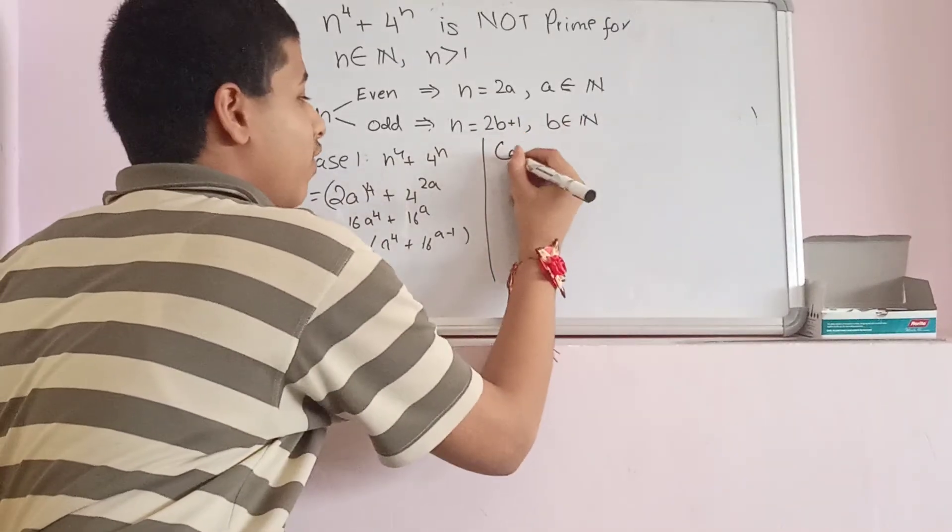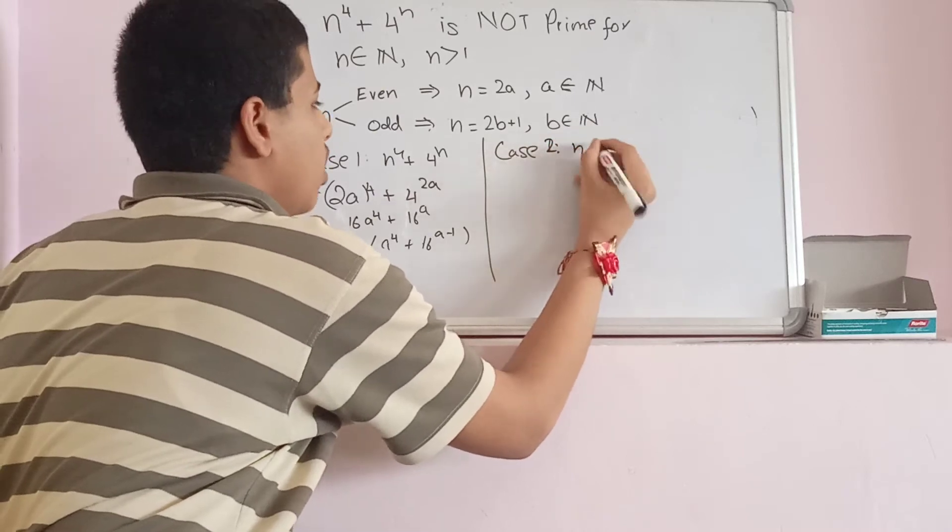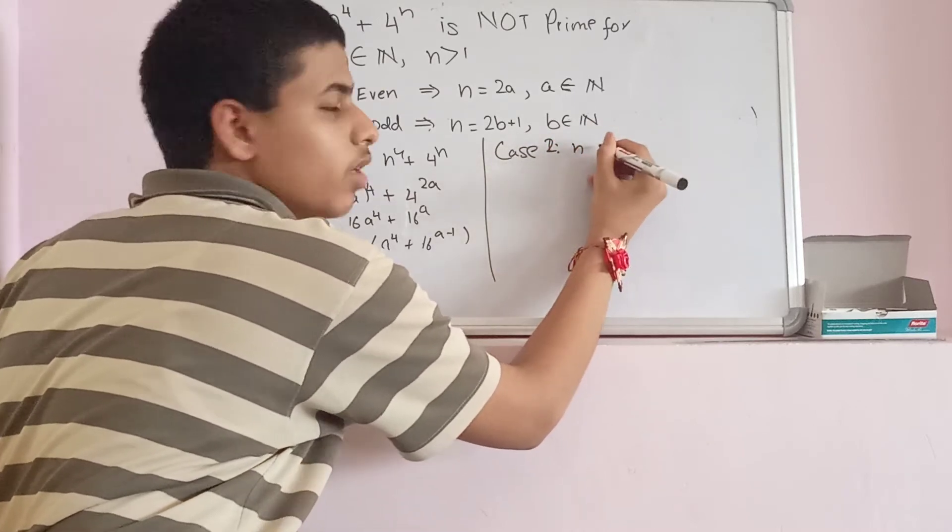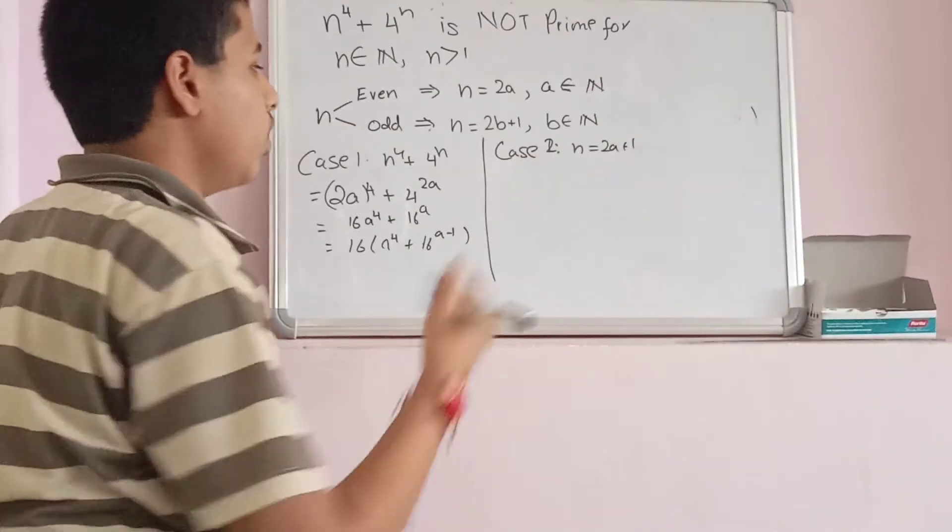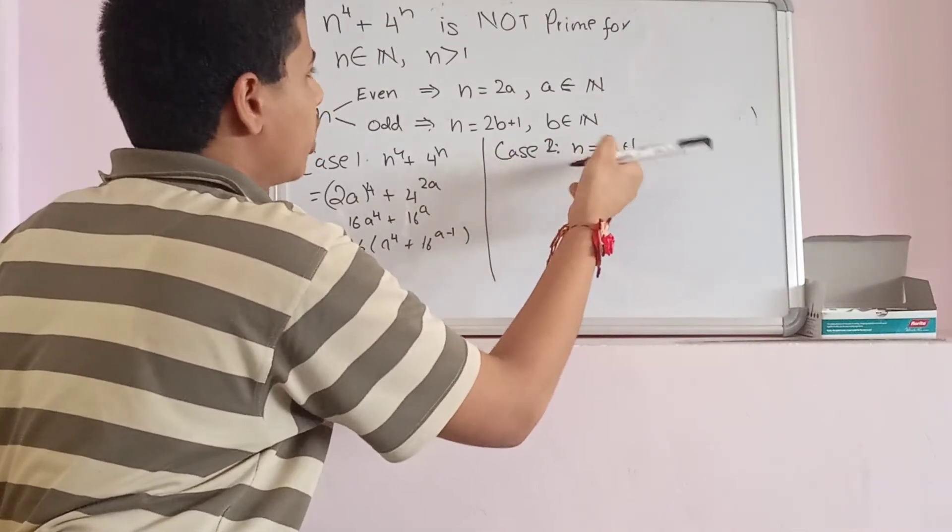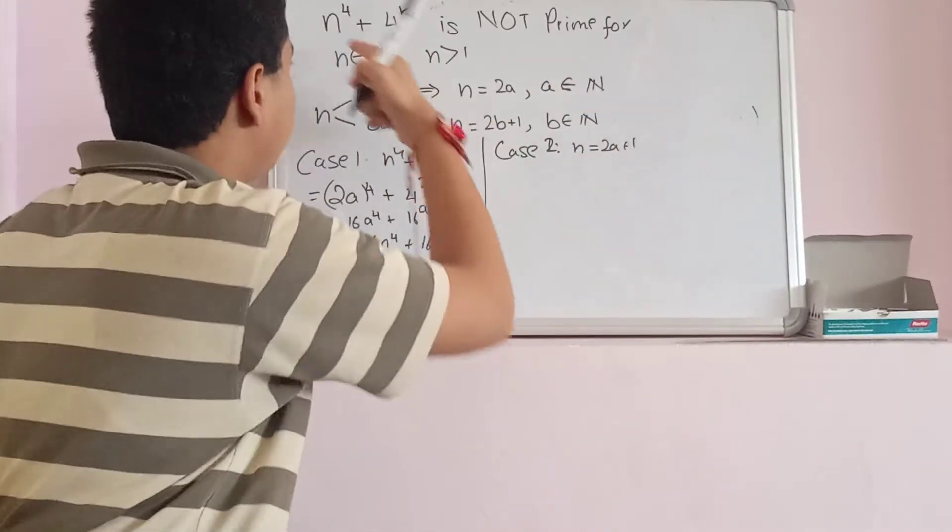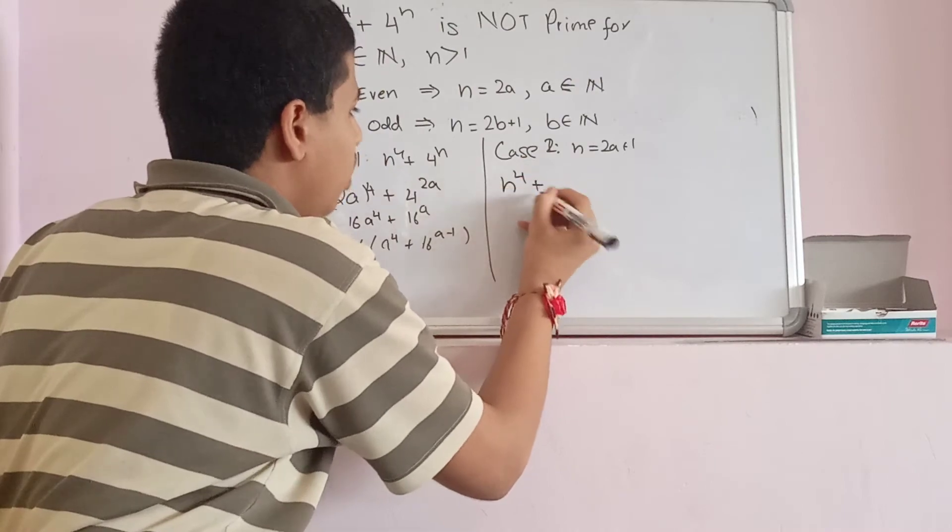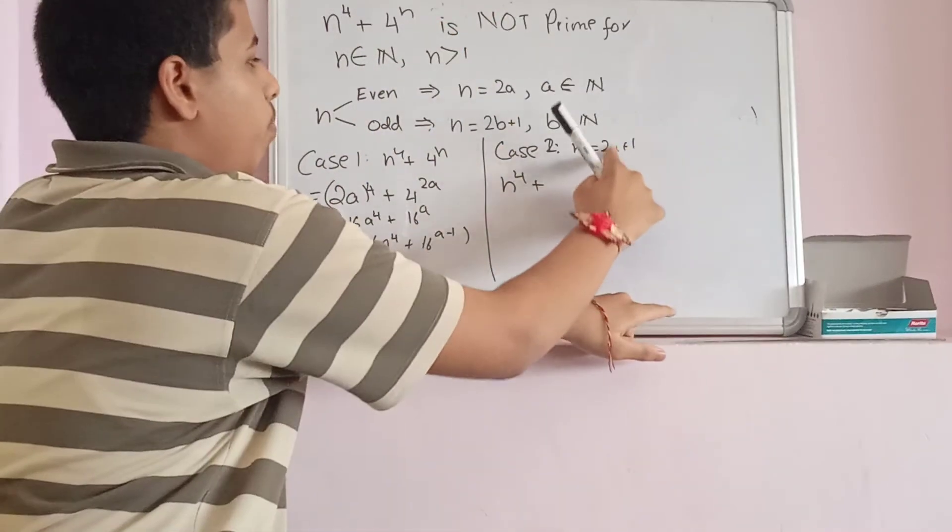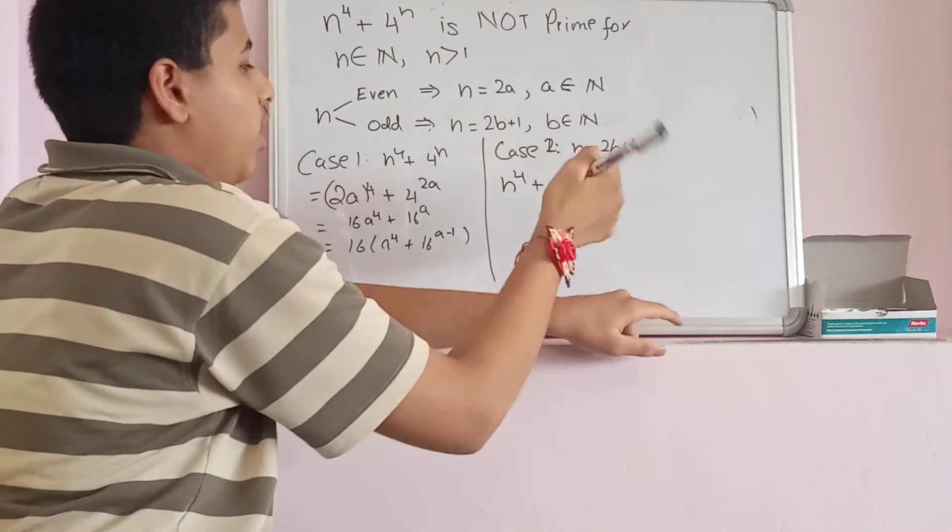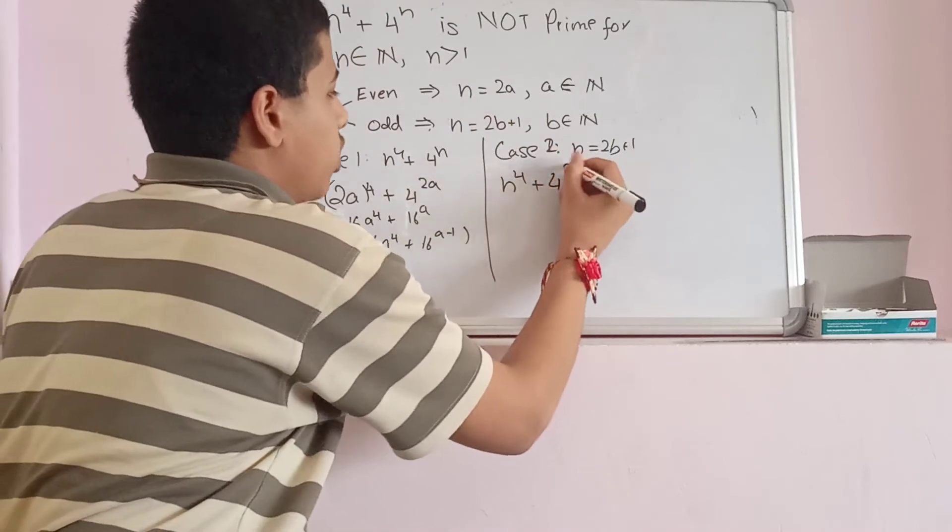So, when n is even, it's not prime. What if n is odd? What happens then? Let's try. Let's put 2b + 1 in place of n. In fact, let's just write n as it is, n^4. Let's replace n by 2b + 1, because we have already used a. Let's replace n by 2b + 1.